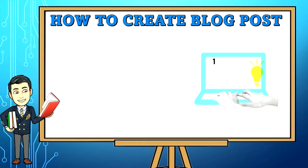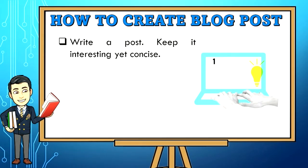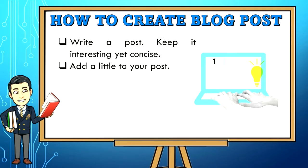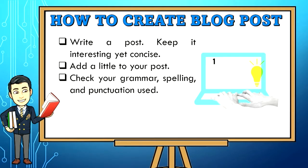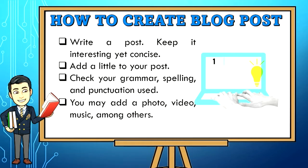Step 7: Write a post — keep it interesting yet concise. Step 8: Add a title to your post. Step 9: Check your grammar, spelling, and punctuation. Step 10: You may add a photo, video, or music, among others. Step 11: Publish your work.